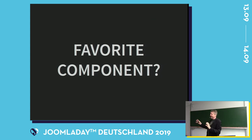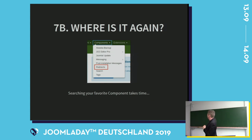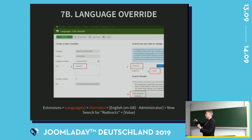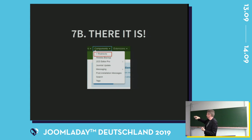We all have favorite components we use a lot. ComContent, the articles component, is one of the most used in a CMS, so it has its own menu. But what about others? If I want to use redirects a lot, I can create a language override to give the component a custom name. If you give it a name starting with something that sorts to the top — like a greater-than sign — the component will appear at the top of the list, making it easier to find. I only do this with one or two components my clients use most.